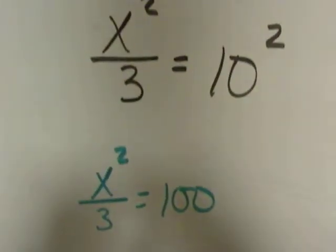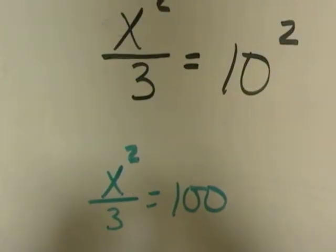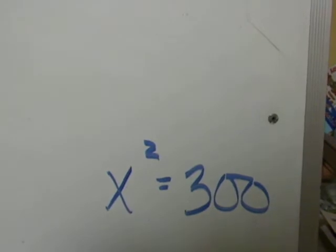Expand the ten squared. So x squared over three equals 100. I need to get rid of that over three by multiplying by three on both sides. So x squared is now equal to 300.